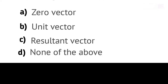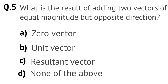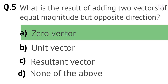Question 5. What is the result of adding two vectors of equal magnitude but opposite direction? Options: A. Zero vector. B. Unit vector. C. Resultant vector. D. None of the above. Right answer is A. Zero vector.